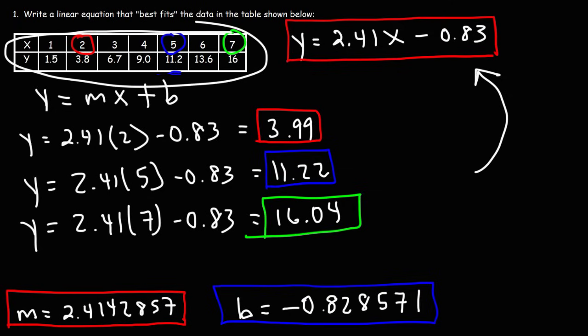So now you know how to use the least squares method when performing linear regression — that is, when you need to write a linear equation that best fits observed data from an experiment. We're going to use Excel to quickly get the slope and y-intercept, since once we have m and b, all we need to do is plug them in. Excel is a quick and simple way to do it — it'll save you a lot of time.